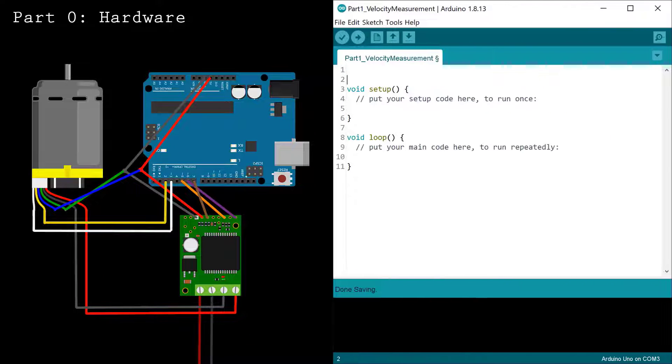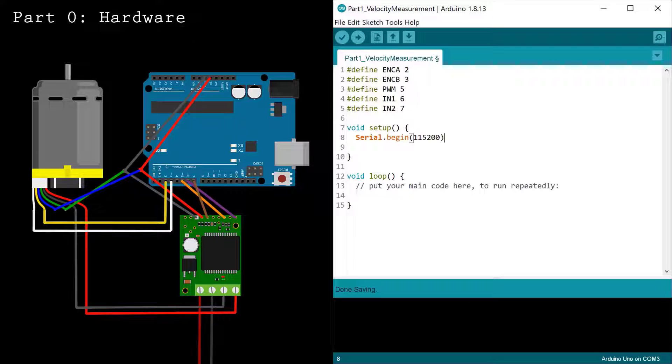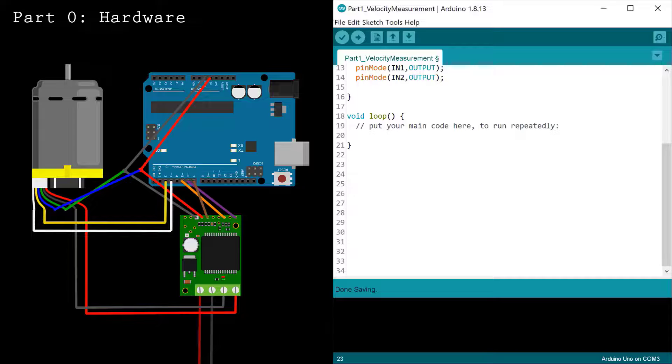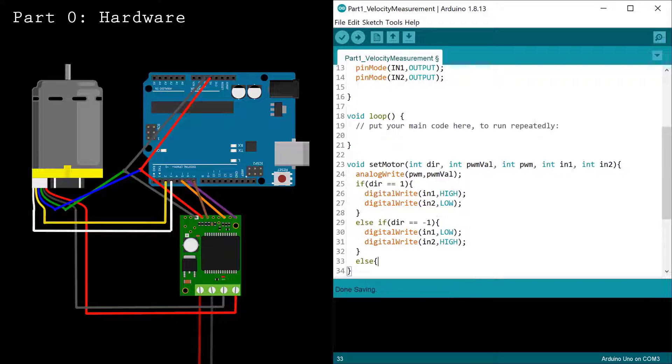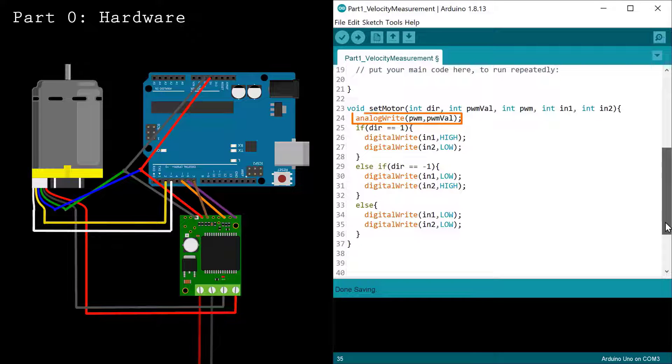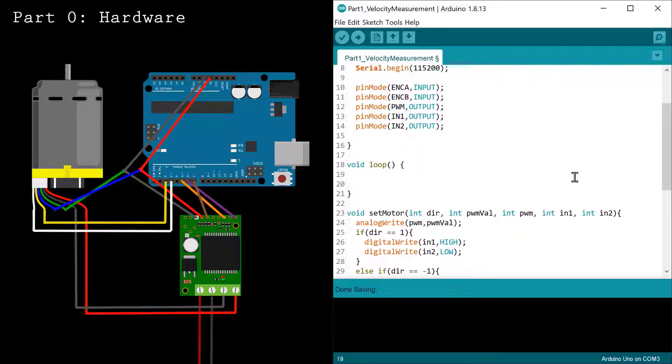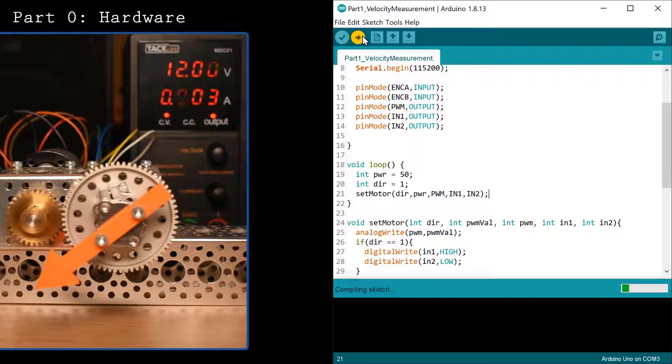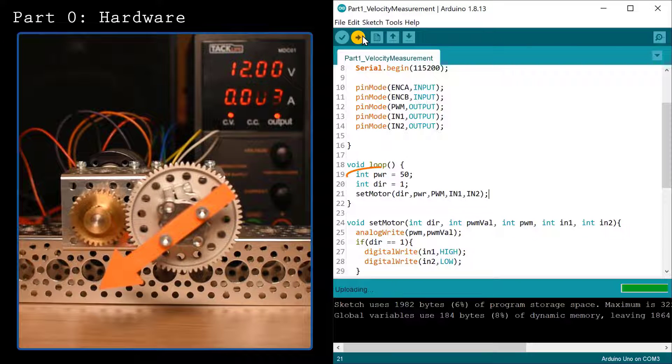Let's get started by writing code to control the motor driver. Here I'm defining the pins I connected to the motor driver. Now I'm coding a function named setMotor that writes the PWM value and sets the direction. Finally, I'll call the setMotor function to test the setup and code. When I run the code with a PWM value of 50, the motor turns relatively slowly.